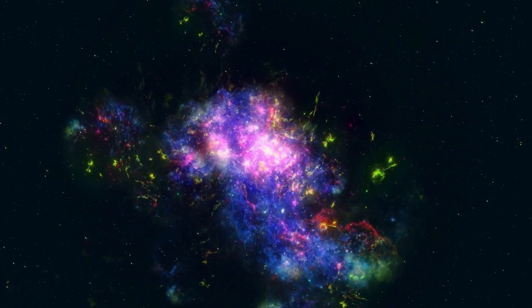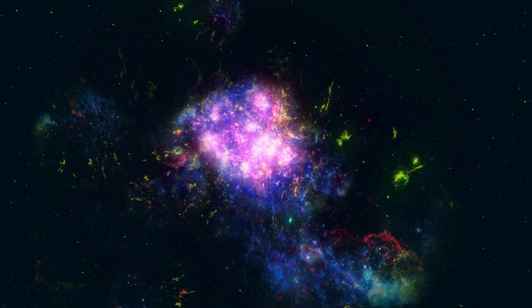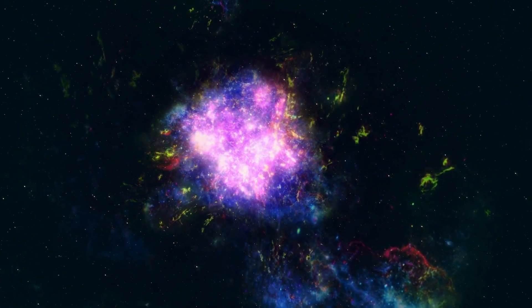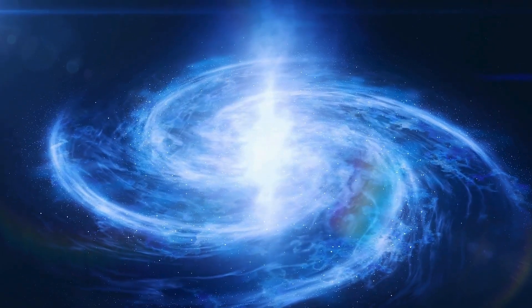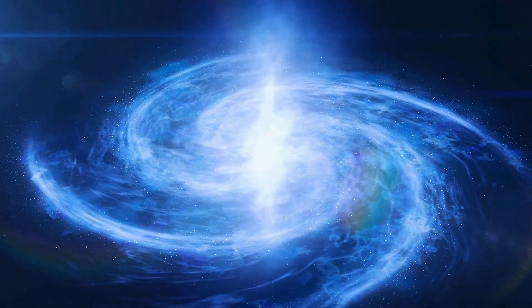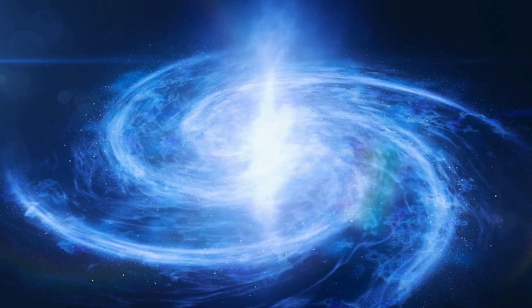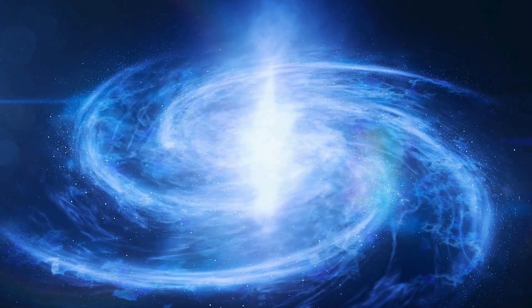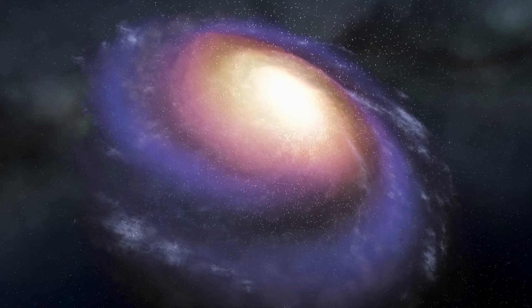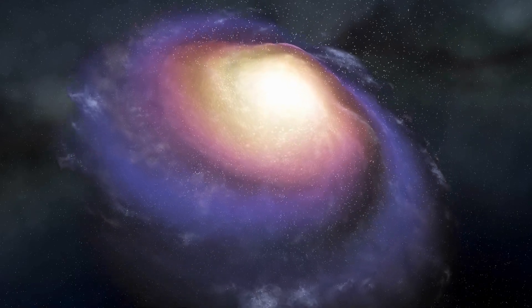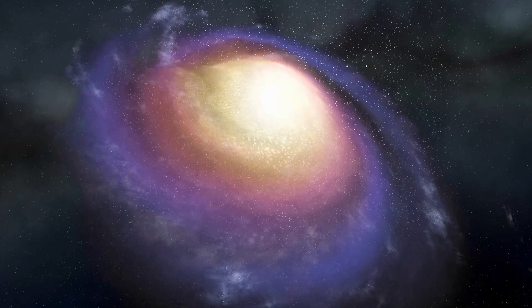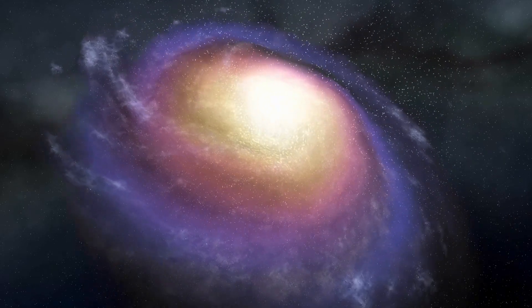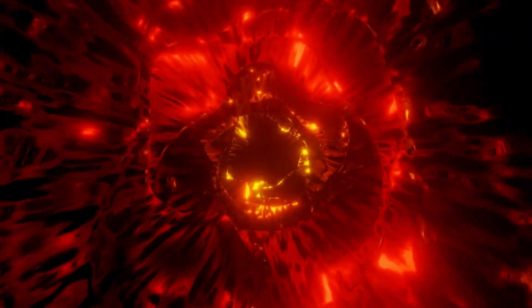But what drives a massive star like Betelgeuse to its demise? Born from the gravitational collapse of gas within molecular clouds, stars like Betelgeuse kickstart their journey by burning hydrogen in their cores. This initial phase, known as the main sequence stage, lasts for millions of years and forms the backbone of a star's life. But as stars run low on hydrogen, they evolve, embracing new energy sources. In the case of Betelgeuse, as the hydrogen depletes, it begins to burn helium, leading to the formation of carbon and oxygen.